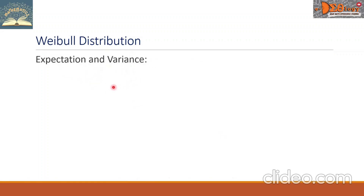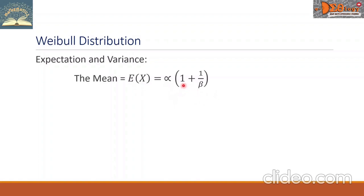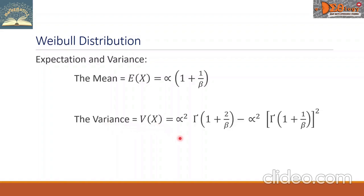Now, the expectation and variance. The mean is also called the expectation, written as E of X, and the formula is alpha times the gamma of the quantity 1 plus 1 over beta. For the variance, we use V of X, which involves a larger formula with alpha, beta, and the gamma function. The gamma function, gamma of r, is equal to r minus 1 factorial.